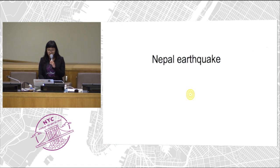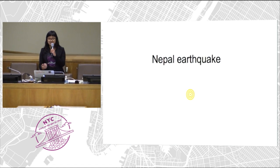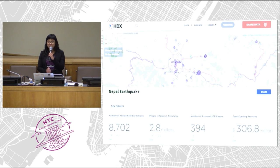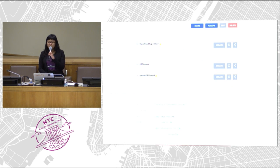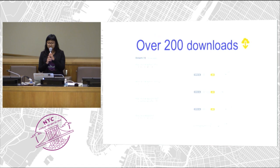One key usefulness of OpenStreetMap on HDX was during the recent Nepal earthquake. On day one, we built a Nepal earthquake page containing a lot of humanitarian data so the emergency response team could access it in one place. Humanitarian OpenStreetMap was one of the first to contribute their data to HDX. Over the course of one week, we had over 200 downloads of Humanitarian OpenStreetMap data.